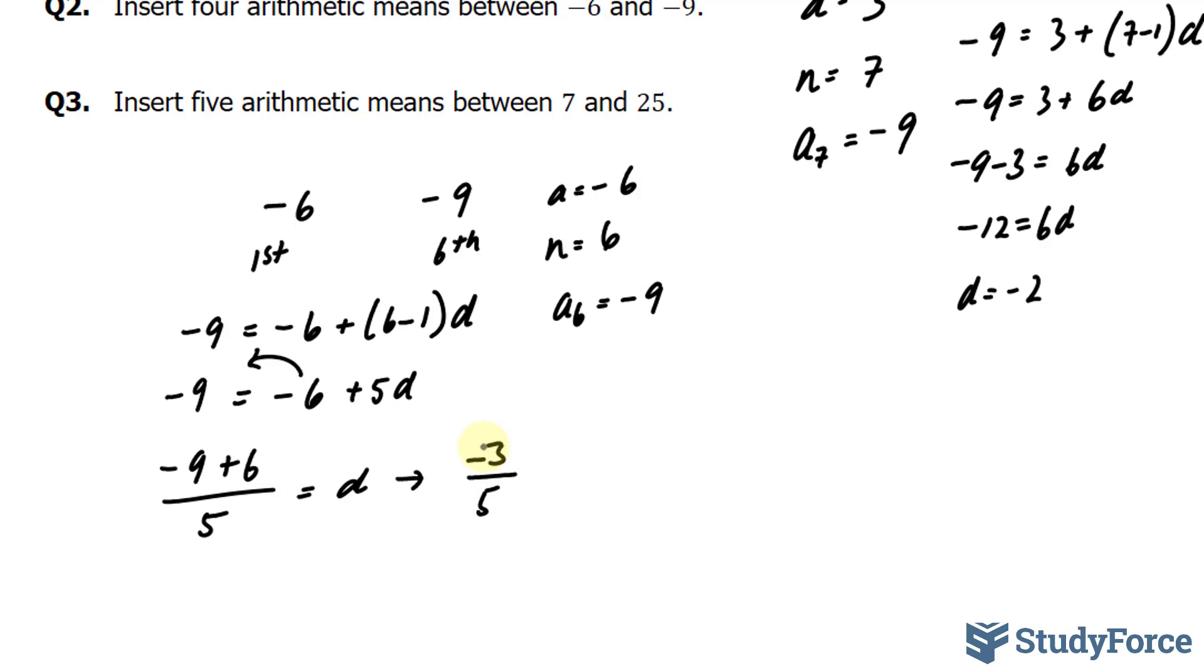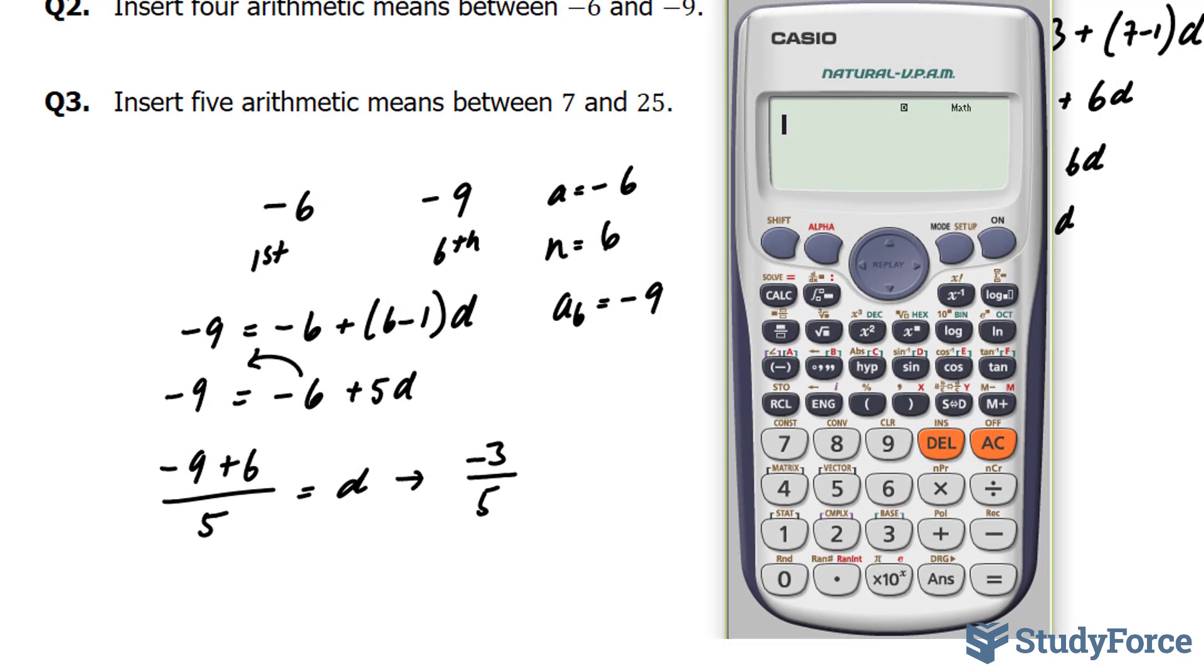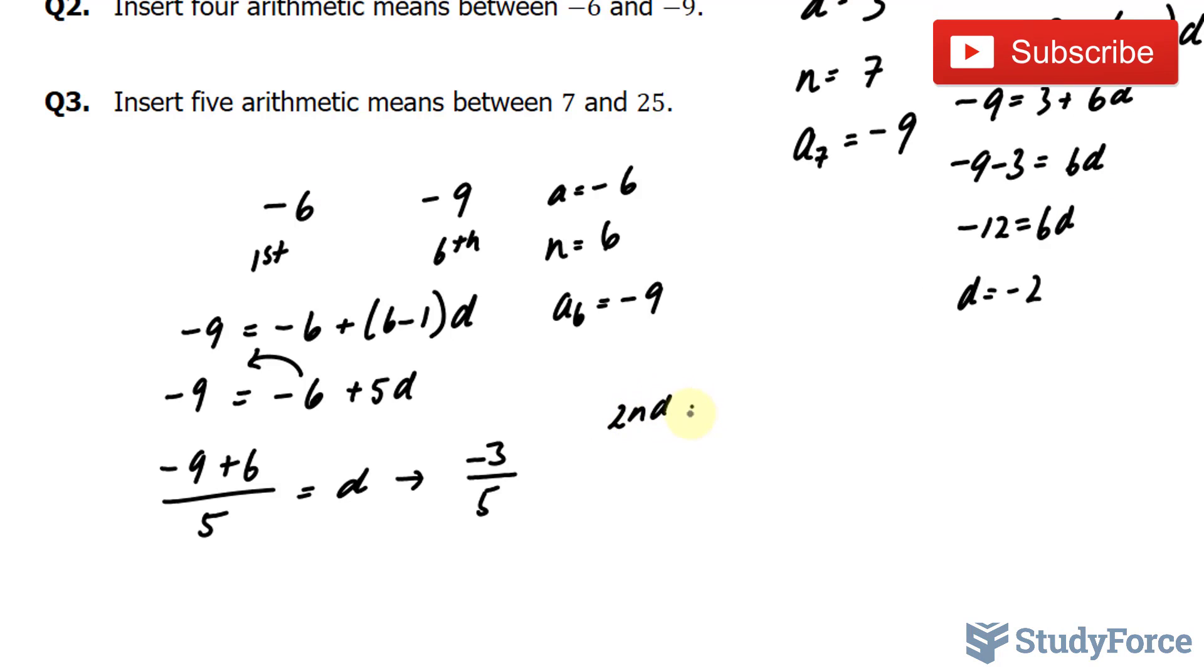Now that we've found our difference, all we have to do is add this number to negative 6 and then keep doing that until you reach negative 9. Let's go ahead and do that. Negative 6 plus negative 3 over 5 gives us negative 33 over 5. So the second number will be negative 33 over 5.